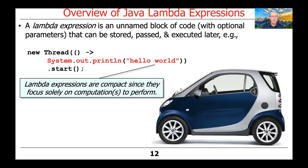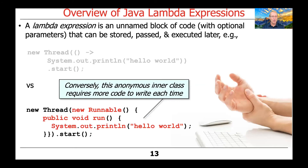Lambda expressions are very compact and concise since they focus solely on the computation to perform, leaving out a lot of the syntactic vinegar, as we might say. Conversely, the alternative way of writing this code using an anonymous inner class requires much more verbose programming. You can see how we have to say new Runnable, open-close paren, open curly brace, public void run, open curly brace — then the actual computation — followed by a bunch more syntactic ceremony that makes things harder to read and harder to type over time.